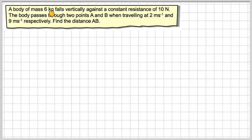A body of mass 6 kilograms falls vertically against a constant resistance of 10 newtons. The body passes through two points A and B when travelling at 2 metres per second and 9 metres per second respectively. Find the distance AB. So we should start with a diagram.